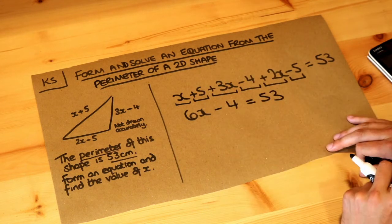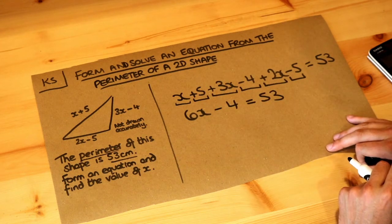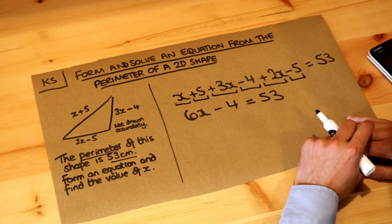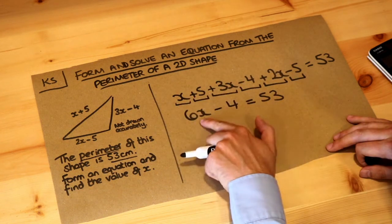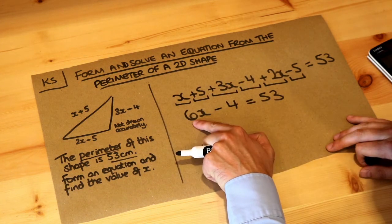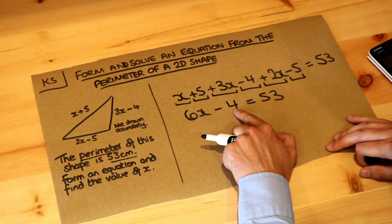So now we've got a nice clean equation to solve. So remember how we solve an equation when there's x only on one side? We just undo the last thing done to x. Well x was multiplied by 6, then we subtracted 4 from it.